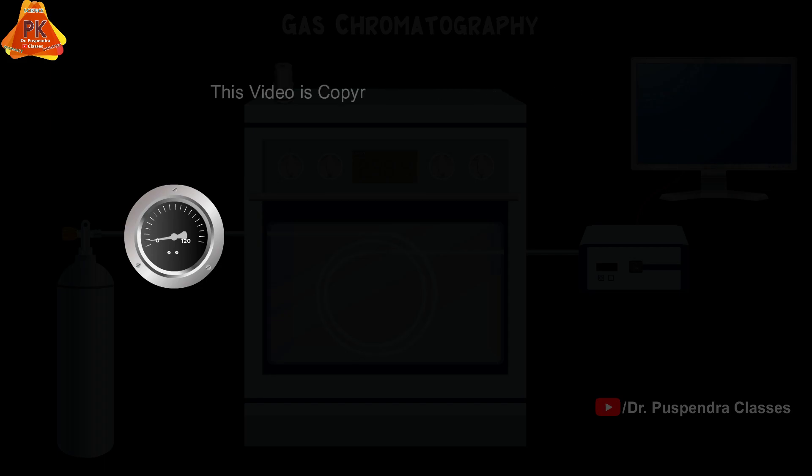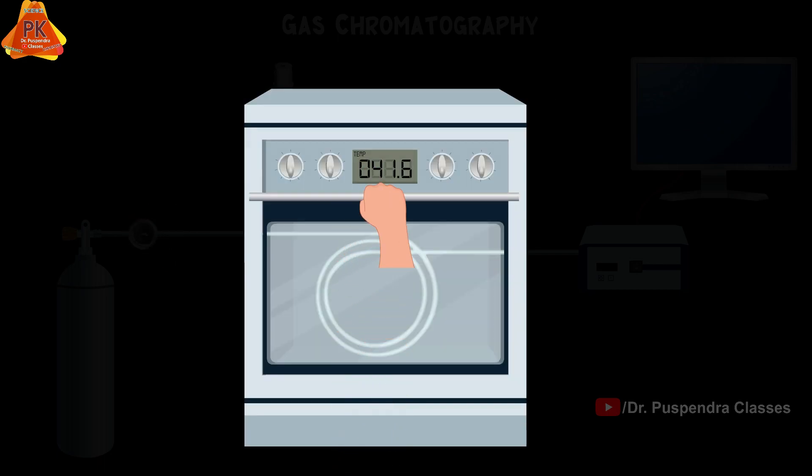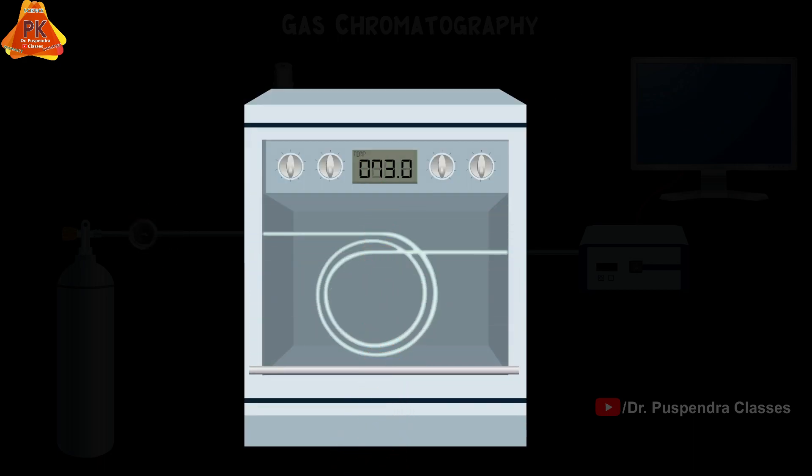Moving on to the GC oven, which is an enclosed chamber used to maintain temperature, especially high temperature. It can be heated up to 400 degrees Celsius.